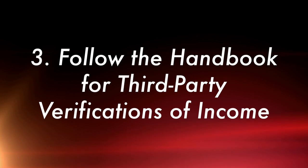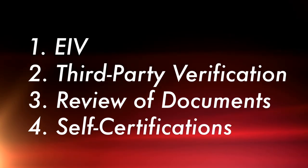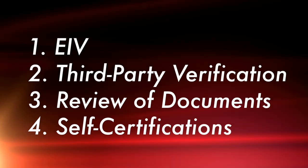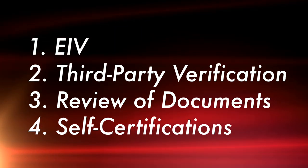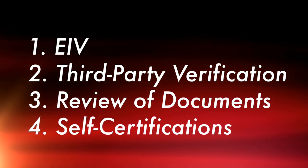Next, follow the handbook for third party verifications of income. As you know, it's EIV first, then the old fashioned third party verification, then the review of documents, or self-certifications. I've seen owners and agents using food stamp reports, checking accounts, and other information to verify income — but no, use those four steps.